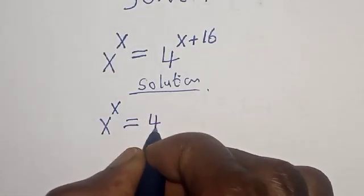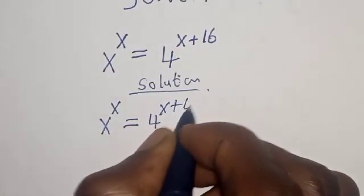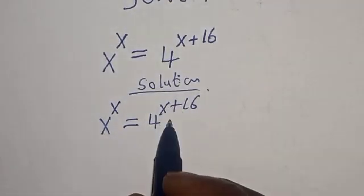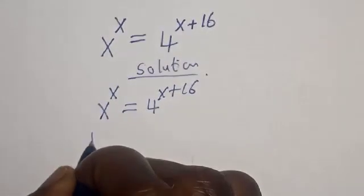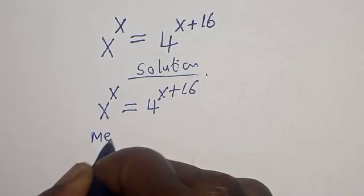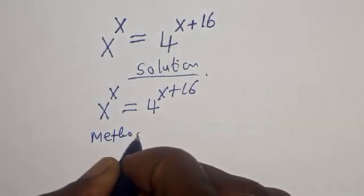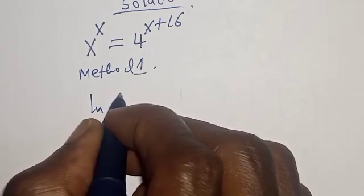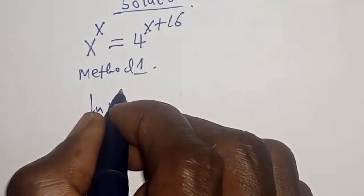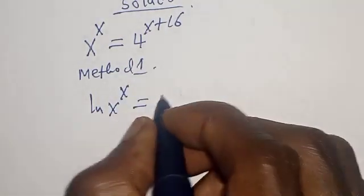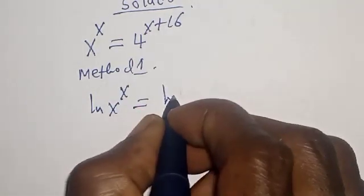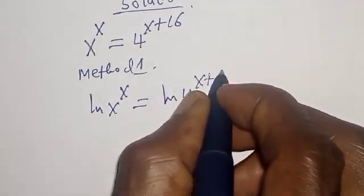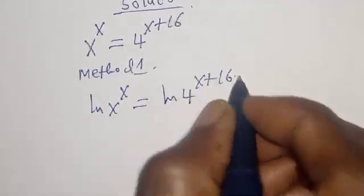We have the given equation x raised to power x is equal to 4 raised to power x plus 16. We are going to solve it using two methods. Let's call this Method 1: take the natural log of both sides — natural log of x raised to power x is equal to natural log of 4 raised to power x plus 16.